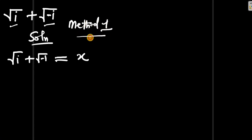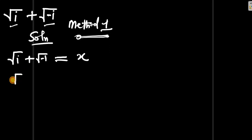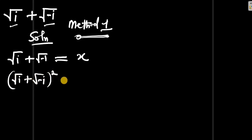I'm going to show two methods of solving this problem. The next step is to square both sides of the equation: (√i + √(-i))² = x².